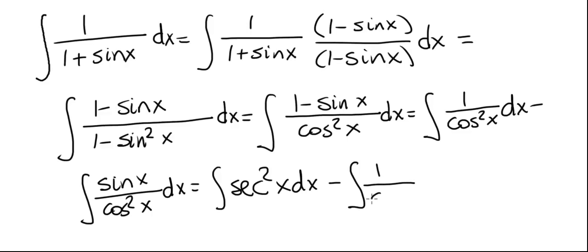I'll write it as 1 over cosine of x. Now we have sine in the numerator, so times sine x over cosine of x. You can see it's the same as sine of x over cosine squared.